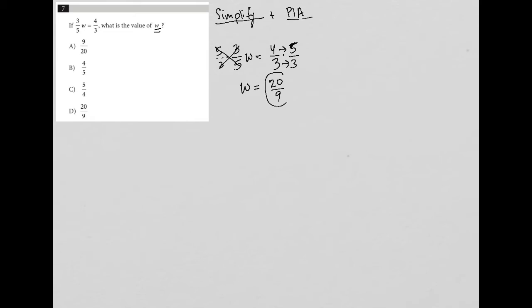Therefore my final answer is 20 over nine. The other strategy, like I mentioned, plug-in answers, also works because the question is asking for a specific variable, w. All of our answer choices represent that variable of w, which means I can just plug in the answers into the w here. This takes a little bit longer because if I'm using this method, I'm not sure what the right answer is, obviously, so I have to try each option.